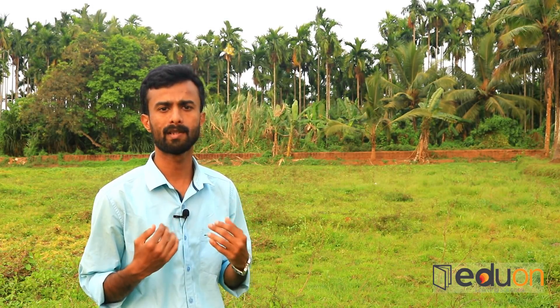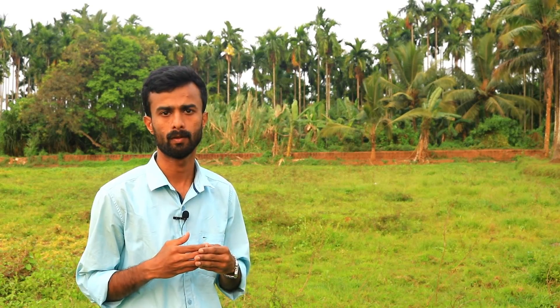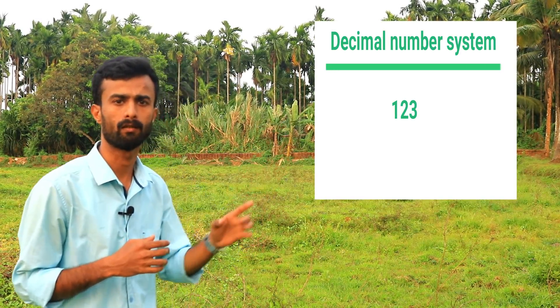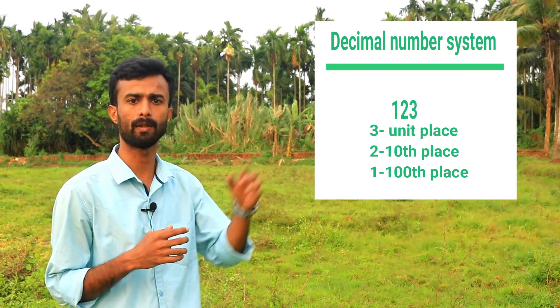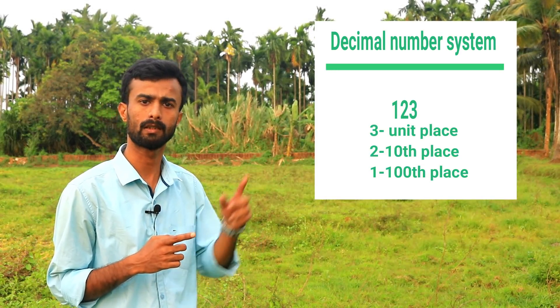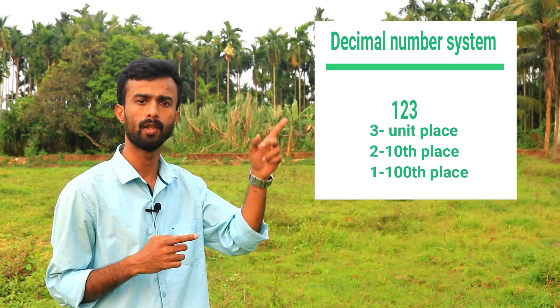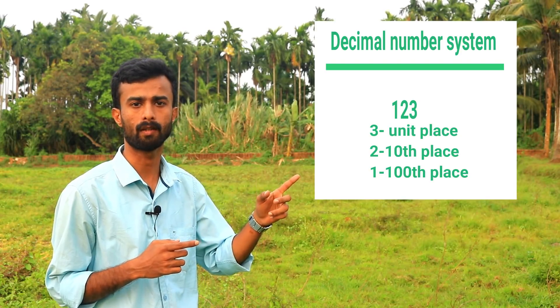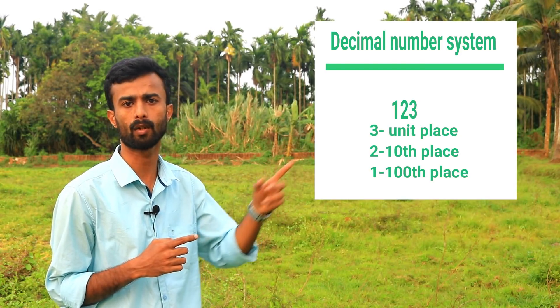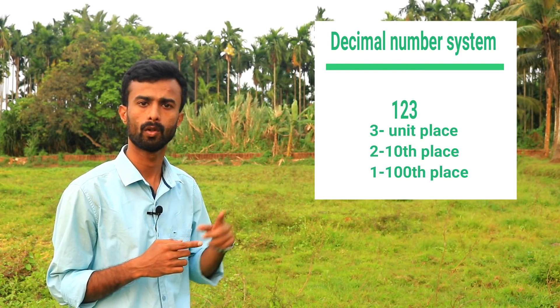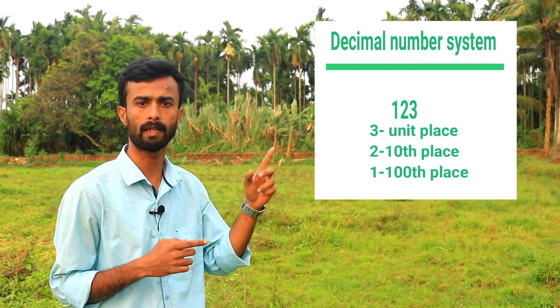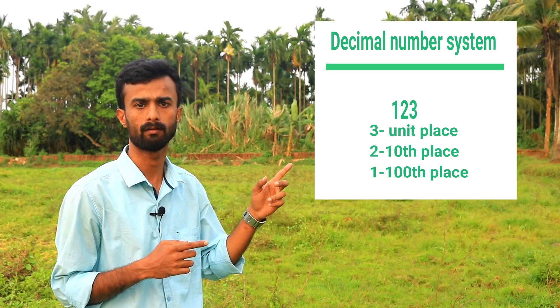If we use a number in decimal, what is the number? We know the unit place, the tens place — 3 units place, 2 units place, 1 hundreds place.